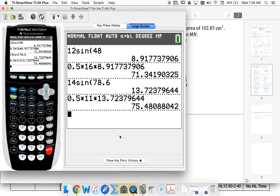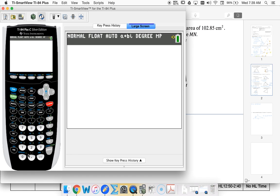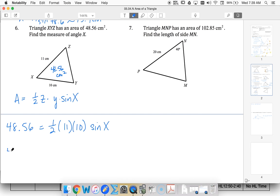I've got half times 11 times 10, and I'm going to get 55. So 48.56 equals 55 sine x. I need to get rid of the 55, so I'm going to divide both sides by 55.